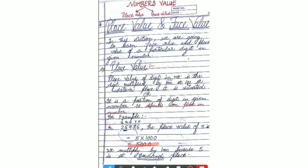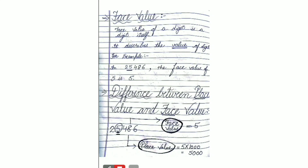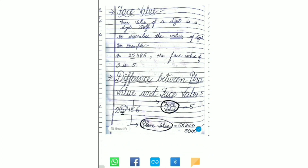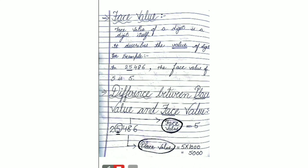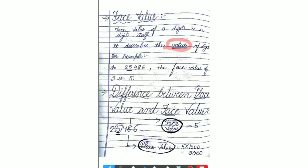Now I am going to tell you about the next topic: face value. Don't confuse yourself between place value and face value. Place value depends on the place or position. But now, we are going to talk about face value. Face value of a digit is the digit itself. It is most important to understand this concept. Face value describes the value of a digit.